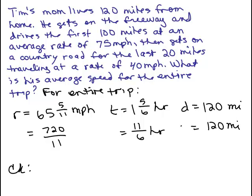So here's the original problem. And so we got for the entire trip, we just found out the rate was 65 and 5 elevenths miles per hour, which if I'm going to change this to an improper fraction, I'll just go back to what it was originally, 720 over 11.